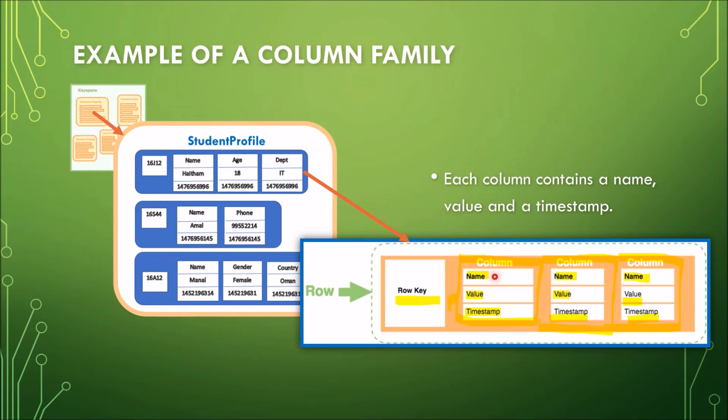And obviously, the value is the value of the name-value pair. The timestamp provides the date and time that the data was inserted. So timestamps can be used to determine the most recent version of data. And that ends our lecture about column store databases.